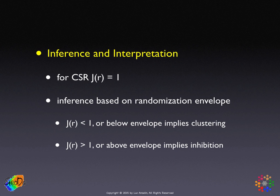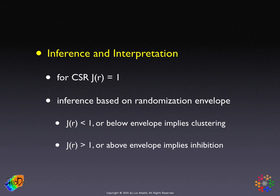Because of its construction, the reference for complete spatial randomness is actually 1 — a horizontal line rather than a curve that changes with distance as for the G and F functions. Inference relies on simulation and a randomization envelope. A J value below 1 suggests clustering, significant if below the envelope. A J value greater than 1 suggests a regular pattern or inhibition, significant if outside the envelope.